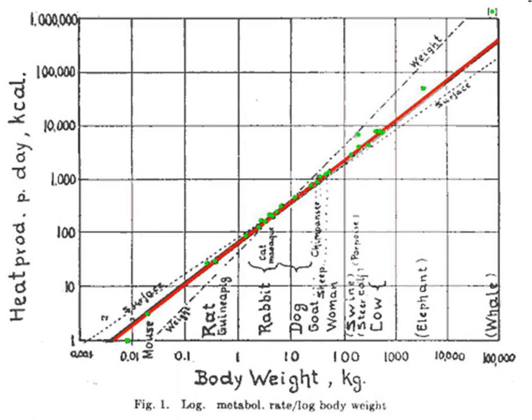One explanation for Kleiber's law lies in the difference between structural and growth mass. Structural mass involves maintenance costs; reserve mass does not. Hence, small adults of one species respire more per unit of weight than large adults of another species because a larger fraction of their body mass consists of structure rather than reserve.